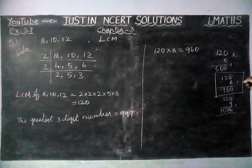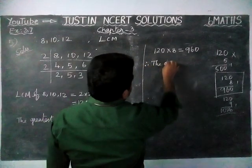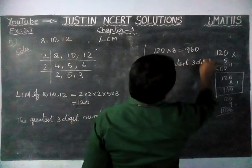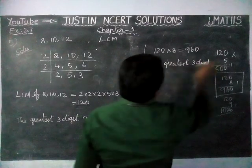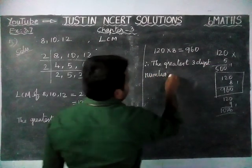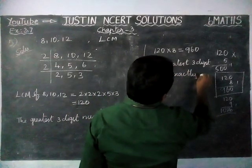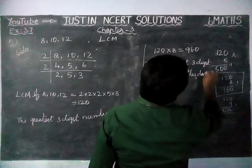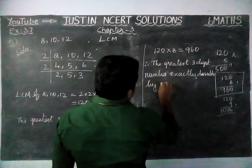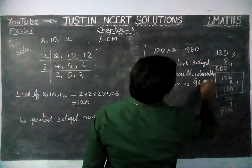Therefore, the greatest three-digit number exactly divisible by 8, 10 and 12 is 960.